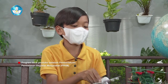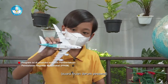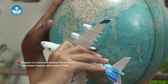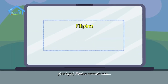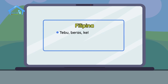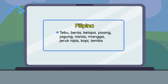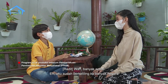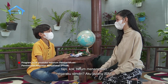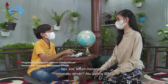Sekarang kita ke Filipina. Halo Filipina, apa komoditas utamamu? Filipina memiliki tebu, beras, kelapa, pisang, jagung, nanas, mangga, jeruk nipis, kopi, tembakau, dan pepaya. Wah, banyak sekali! Eh, aku sudah berkeliling ke banyak negara tapi kok belum menanyakan negara aku sendiri. Aku pulang dulu.